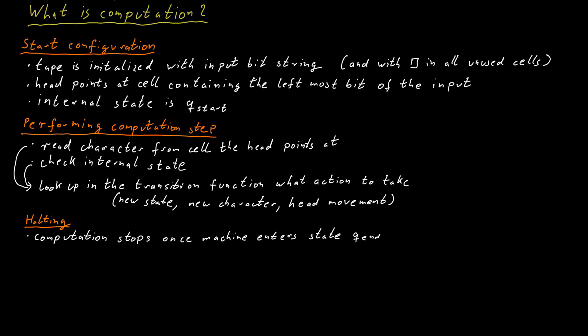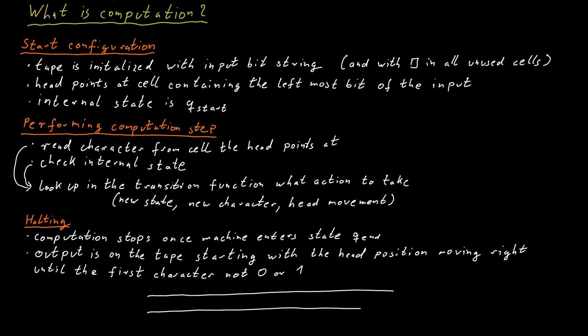The output of the Turing machine can now be read from the tape. The output starts with the position where the head points to right now when the Turing machine terminates and ends moving to the right when we find the first symbol that is not a zero or one. So the bit string that's written on the tape starting at the head position and going to the right until we first encounter a symbol that is not zero or one is the output of this computation.